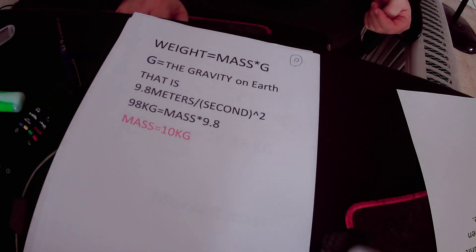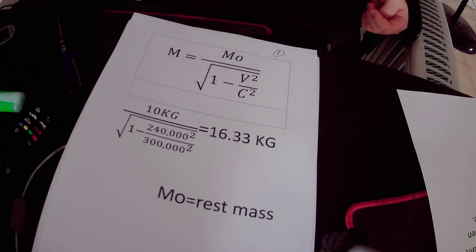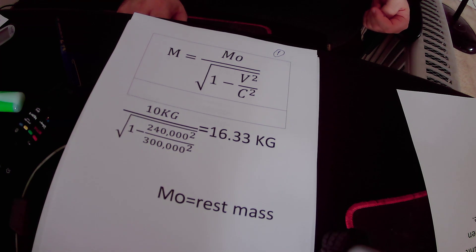So when the twin brother moves in the spaceship at a speed of 80% of the speed of light, that is 240,000 kilometers per second, according to the mass increase equation of spatial relativity, his mass in space will be about 16.33 kilograms, but he will not feel it.